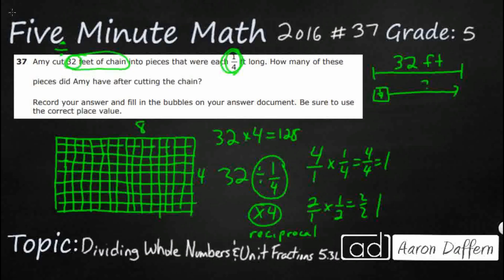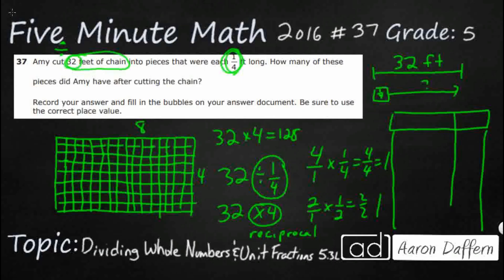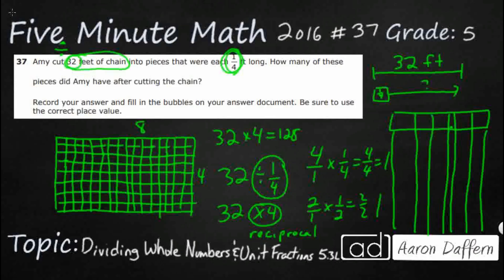Dividing by a fraction is the same as multiplying by its reciprocal. So 32 times 4 is something that's easy — that's 128, we can do that all day long. Now we still need to put this into our answer chart. There's no A, B, C, or D for us to verify our answer. You're going to end up having two points to the right of the decimal, three to the left, and we put our 128 right here.